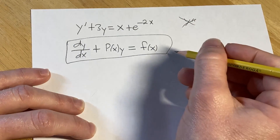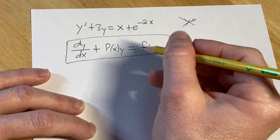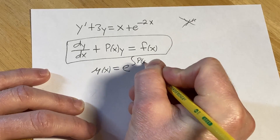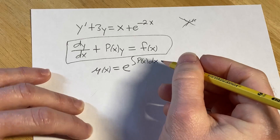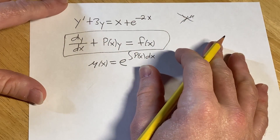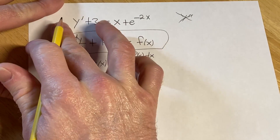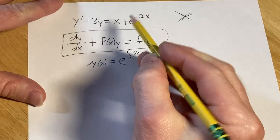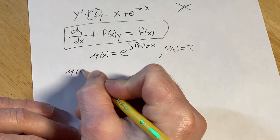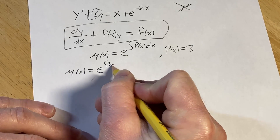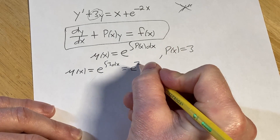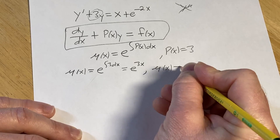To solve one of these, you first write it in standard form. Then you compute something called the integrating factor: mu(x) equals e to the integral of P(x) dx. This solution technique is a bit contrived — the derivation isn't hard but takes some effort. Big P in this case is 3 (whatever is in front of y), so the integrating factor is mu(x) equals e to the integral of 3 dx, which equals e to the 3x. You don't need the plus c here.